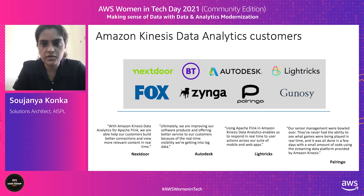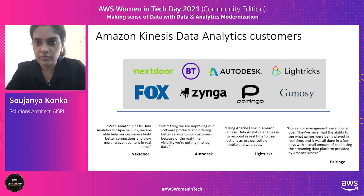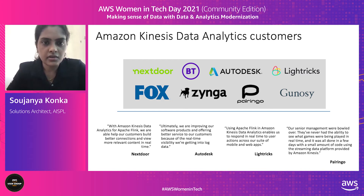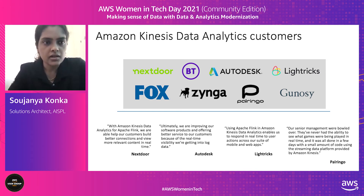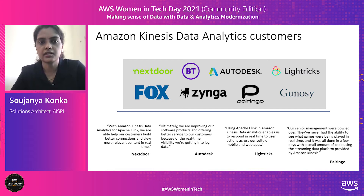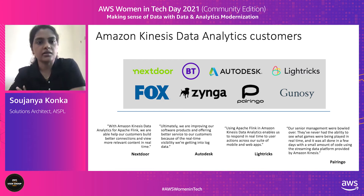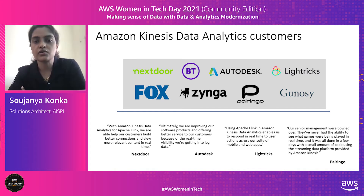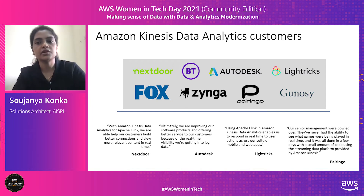Let's talk about customers who have benefited from Amazon Kinesis services. Here is Nextdoor — a neighborhood hub for trusted connections and exchange of helpful information, goods and services. With Kinesis Data Analytics for Apache Flink, they were able to help their customers build better connections. Nextdoor was able to create simple queries that provided recommendations to users and also helped them discover local businesses and offers, connecting people with similar interests.